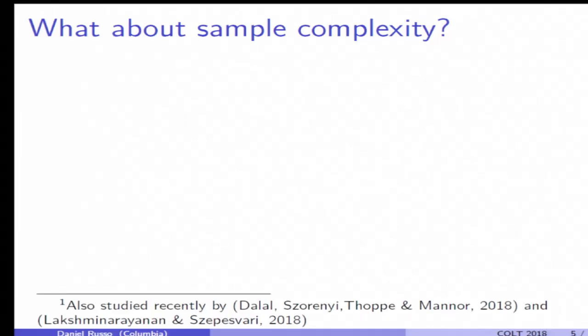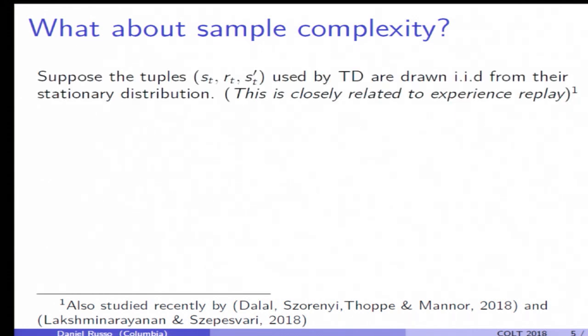And until some very recent work, also in 2018, this is very limited. So I'll flash up one example of the kind of bound we prove that is specialized to a case where the samples are drawn IID from a stationary distribution. So this is a model that most aligns with the setup of SGD analyses.